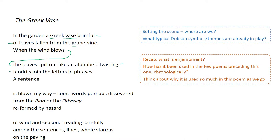So when the wind blows the leaves spill out like an alphabet. Twisting tendrils, a sentence blown my way, dissevered from the Odyssey, reformed — you get the drift. There is a lot of enjambment in this poem, and also in the last few poems we've studied preceding this one chronologically for Dobson. So what is the point in this one particularly? What is the point of breaking these sentences up? Have a think about it as we go through — we are going to look at it again at the end.